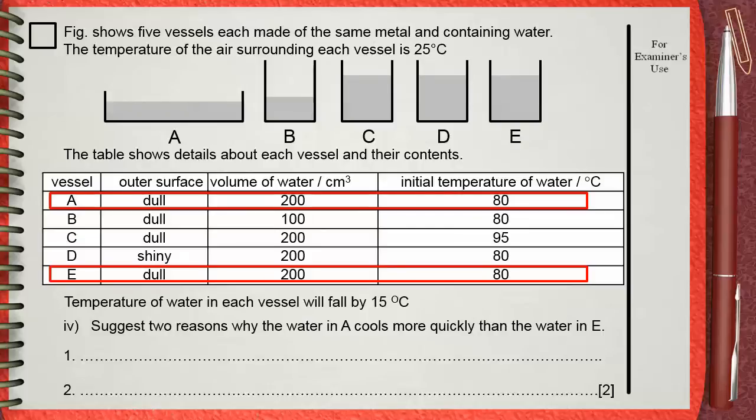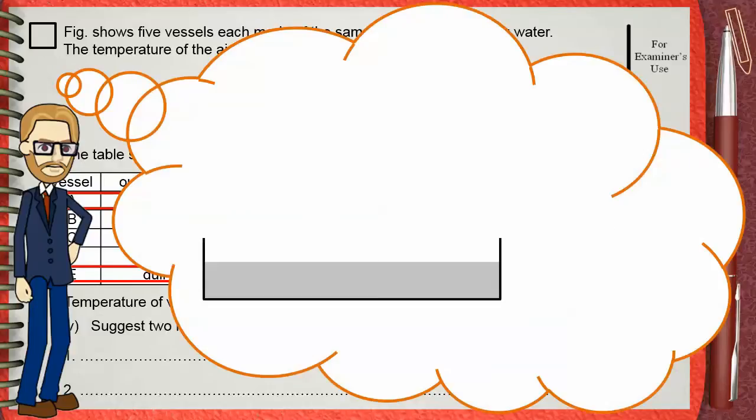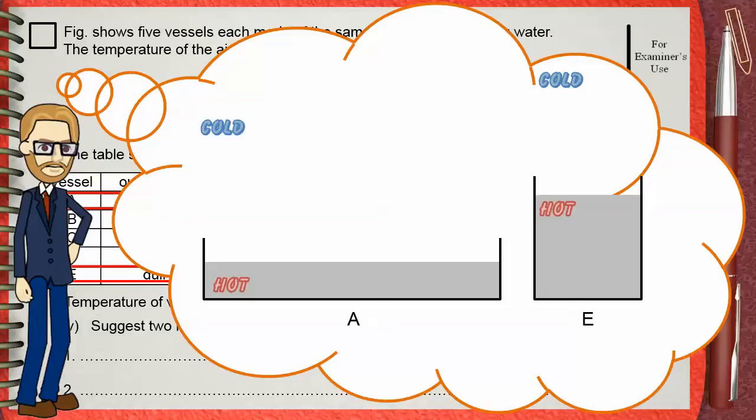A is wider with larger surface area. This is A and this is E. A has a greater surface area, so the rate of evaporation is faster. This causes faster cooling.